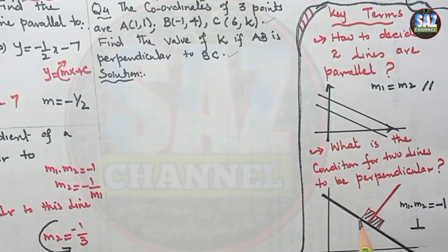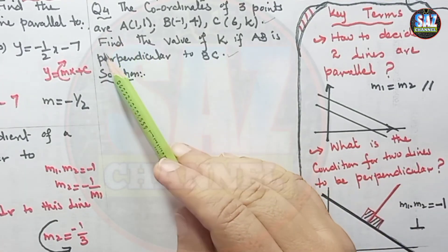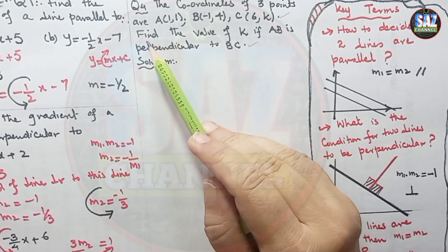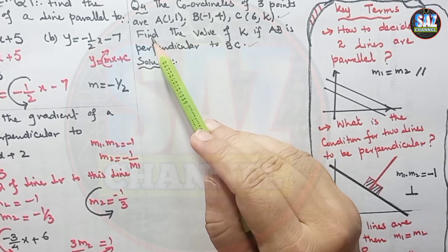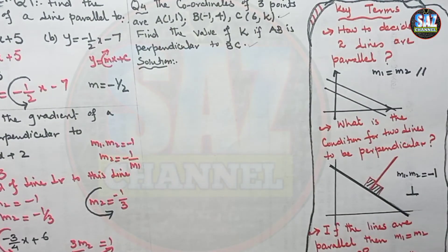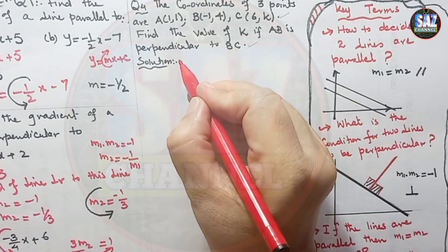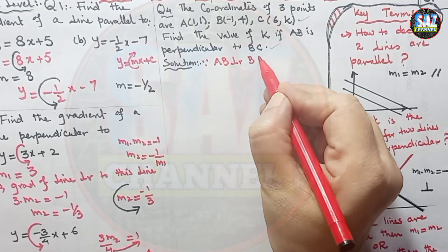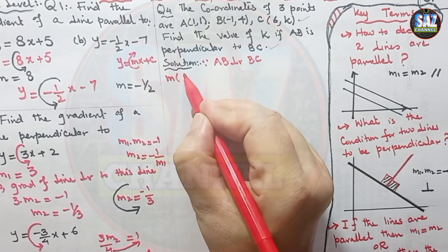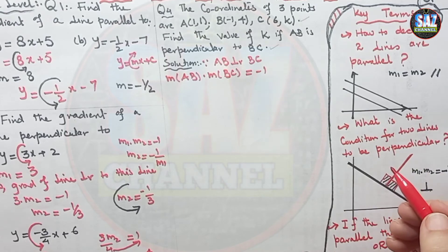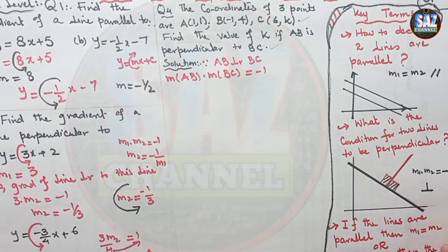It is important to understand the requirement of the question. The expression that begins after 'find' is the requirement: find the value of k, given that AB is perpendicular to BC. Recall that when two lines are perpendicular, their gradients satisfy m of AB multiplied by gradient of BC equals minus 1. Because AB is perpendicular to BC, therefore gradient of AB times gradient of BC equals minus 1. It is really important to give such references to the examiner.